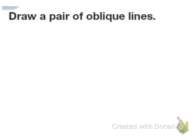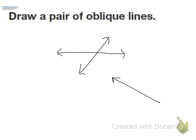So this one says draw a pair of oblique lines. I'm going to draw two lines that intersect but do not form square corners. So for example I might draw a line this way and a line this way. You could also go this way and this way.